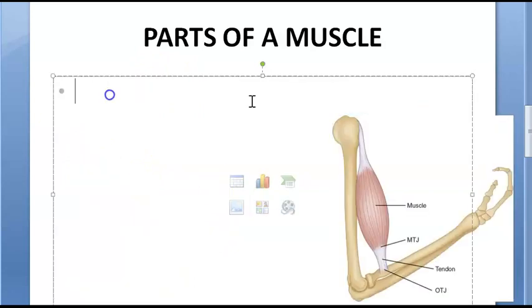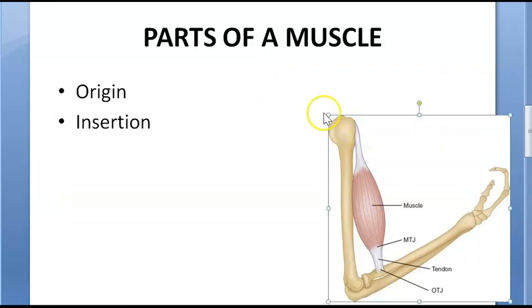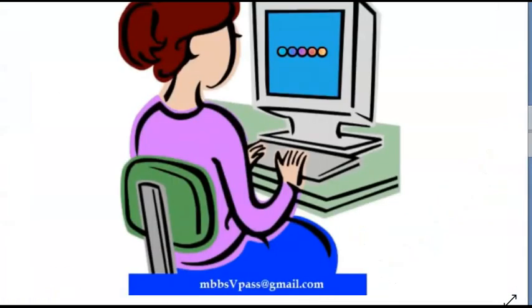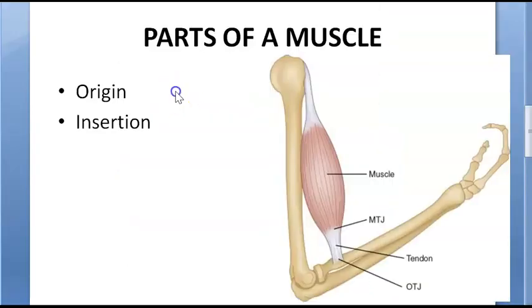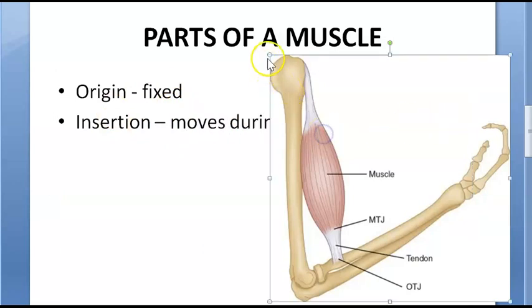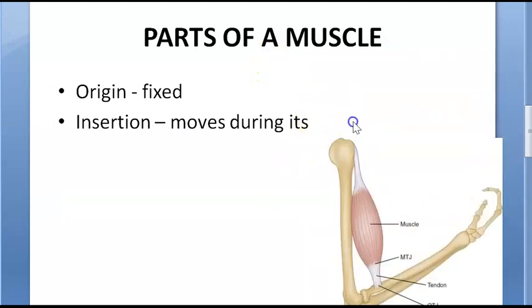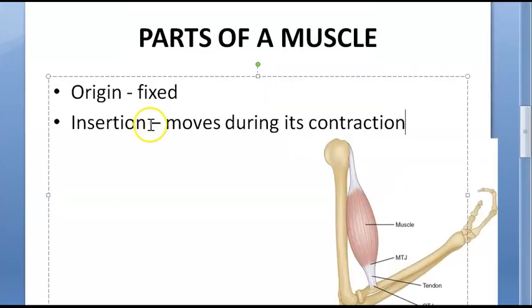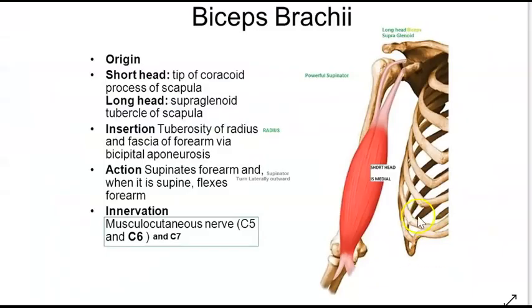What are the parts of muscle? Each muscle has an origin and an insertion. Origin is where the muscle remains fixed during contraction, and insertion is where it moves during contraction. Some people think origin is simply where it comes from, but the correct definition is based on what stays fixed and what moves.